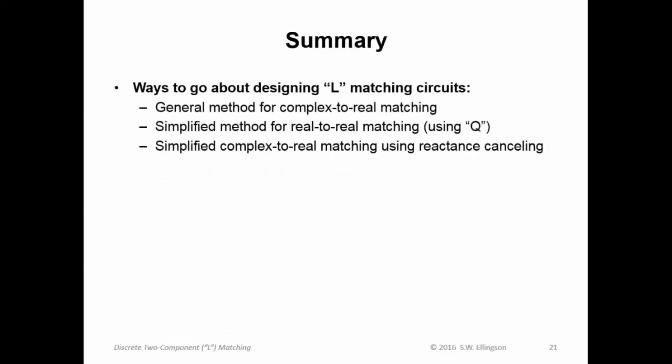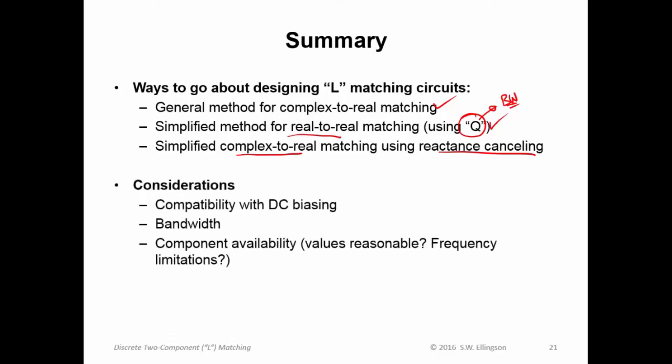Now a summary. I talked about three ways in general to go about designing L-type matching circuits. One was a general method for complex-to-real matching. Second one was a simplified method for real-to-real matching, which resulted in the introduction of this parameter Q, which will have future relevance to us, in particular concerning bandwidth. And then thirdly, simplified complex-to-real matching using reactance canceling. So you do reactance canceling to get rid of the reactive component of the complex impedance, and then you do real-to-real matching. And then hopefully you can arrange the circuit to eliminate one of the three resulting reactances. All three of those methods are commonly used. You will probably end up using all three at some point in this course.